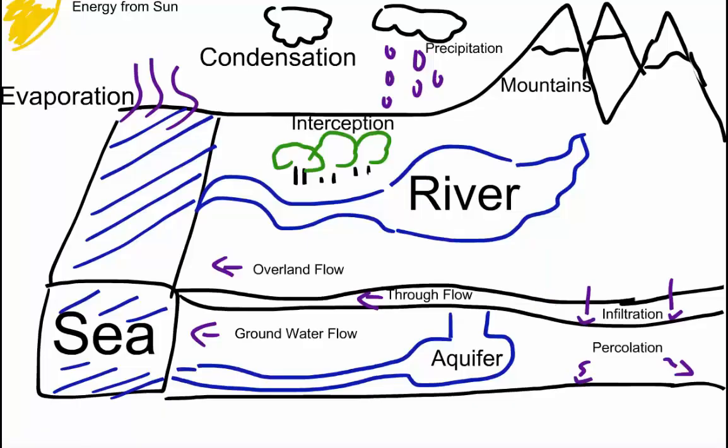In the soil, we have a thing called through flow, where the water doesn't quite go all the way down to the bedrock, but it then doesn't travel towards the sea. But how does the water get from the overland down to the soil? And that is infiltration.